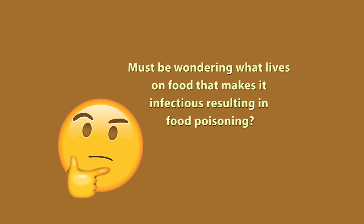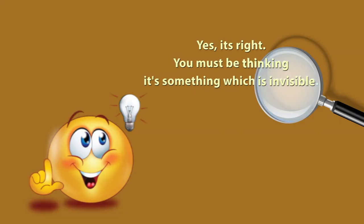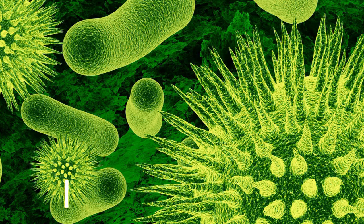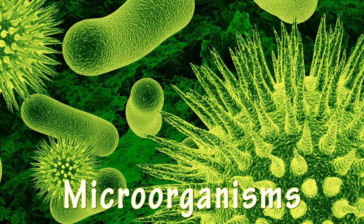People call it food poisoning while the medical community calls it foodborne illness. We actually are not being poisoned by food but are infected by something that lives on food. They are microorganisms that we cannot see through our naked eyes, and thus we end up eating food that is infected or poisoned by microbes.